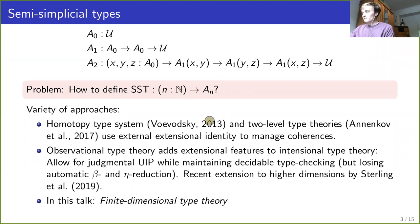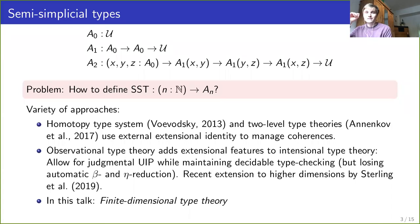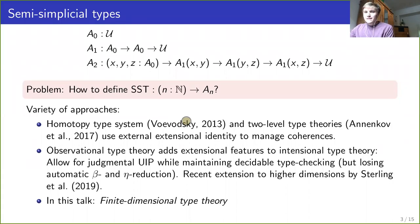There are experts in the audience who know more about two-level type theories, which builds on an idea of Voevodsky, and on the other hand observational type theory or more recently XTT. The essential idea there is that we need some extensional identity type somehow in our type theory to deal with coherences.